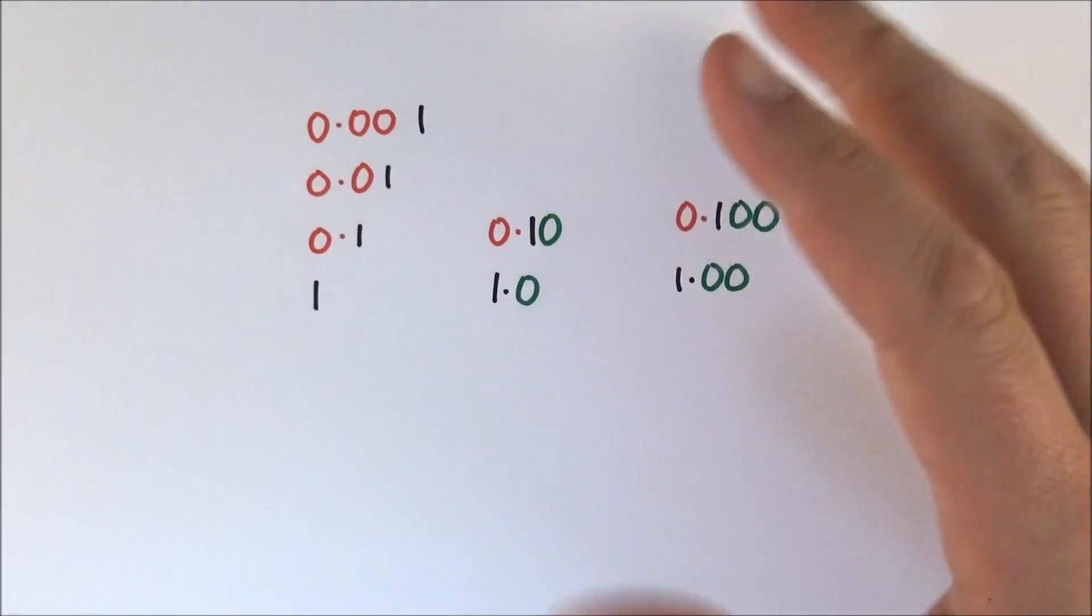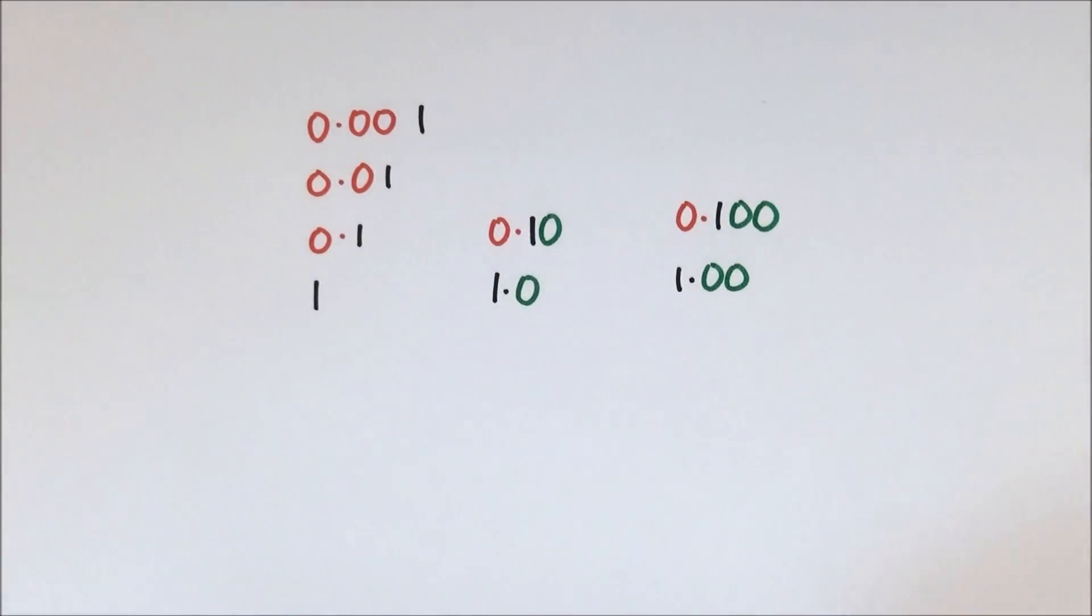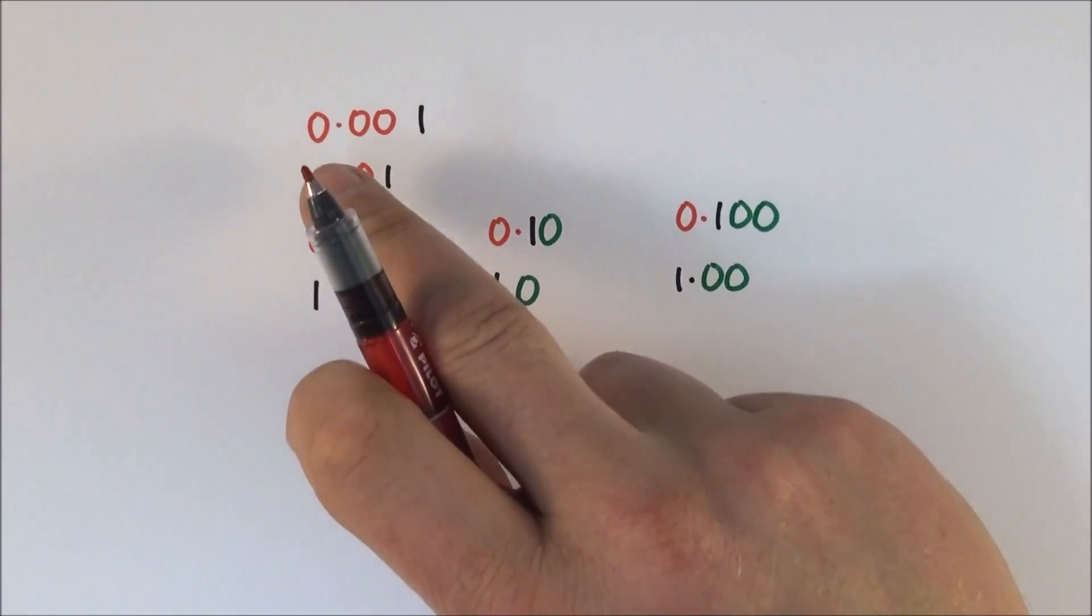Now if you have lots of other numbers people tend to be fairly happy about significant figures, but it's the zeros that cause the real problem and it's to do with where the zeros are.